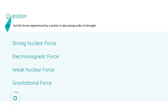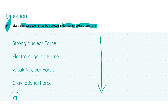Moving on to part two, we're asked to list the forces experienced by a proton in decreasing order of strength. A proton — indeed any particle in the universe — is subject to the four fundamental forces of nature. In decreasing order of strength: strong nuclear force, electromagnetic force, weak nuclear force, and gravitational force. For the correct order you get three marks, and four marks for your knowledge of the fundamental forces.